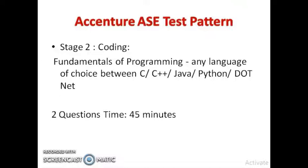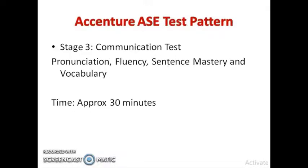Stage two is Fundamentals of Programming. You need to choose one language from C, C++, Java, Python, or .NET — whichever you are comfortable with. This is a coding round where you will have two questions to complete in 45 minutes. You need to code both questions and pass the test cases within the given time.